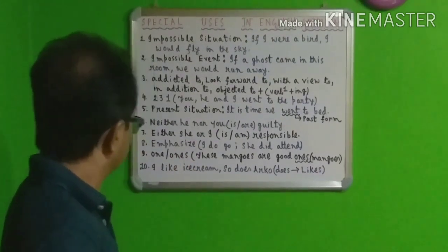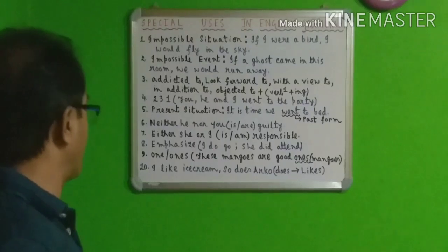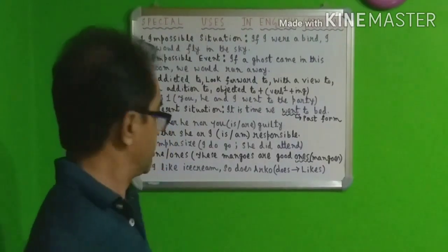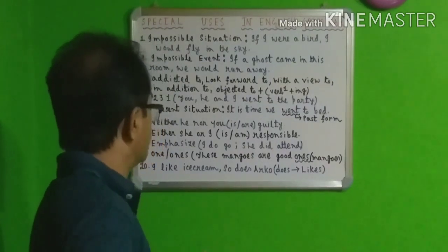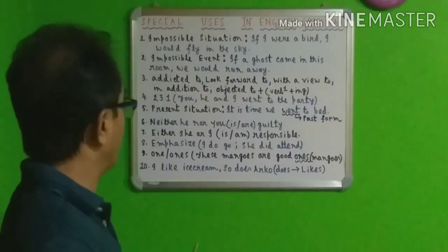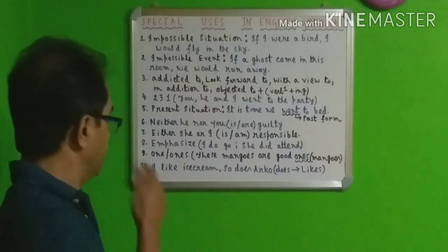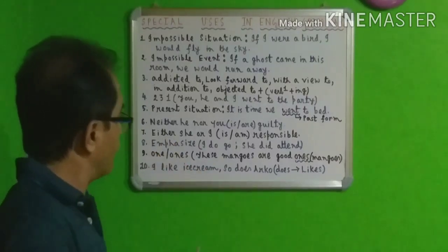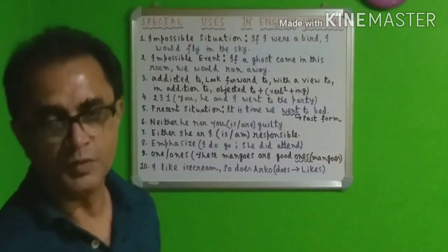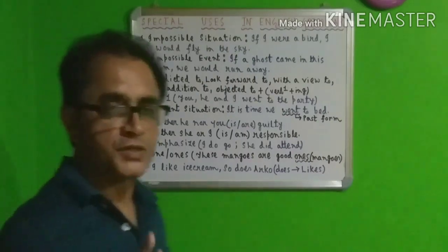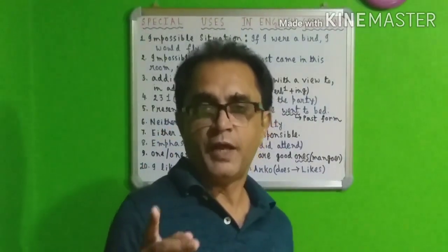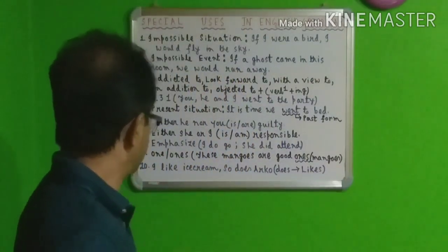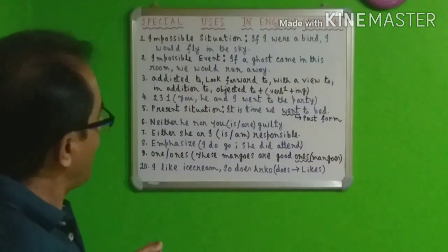Look at number seven: 'either C or I.' What verb form will come? Again, you have to see the second subject. The second subject is 'I,' so it will be 'am': 'Either C or I am responsible.' If the sentence is the other way — 'Either I or C is responsible' — 'is' is used. Remember: in such situations, look at the second subject and put the verb according to the second subject.